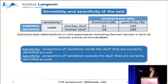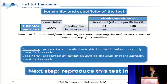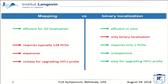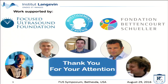What are the pros and cons of mapping versus binary localization? Mapping is efficient, but expensive and not easy for upgrading an existing HIFU system. On the other hand, binary localization is efficient, even if it's only binary. But it requires only one PCD, so it's really inexpensive and easy for upgrading a HIFU system. Thank you for your attention.